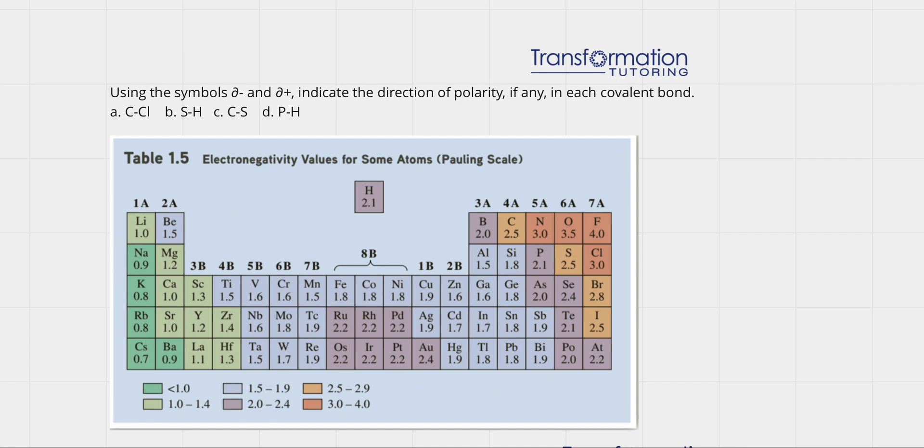Using the symbols delta minus and delta plus, indicate the direction of polarity, if any, in each covalent bond. In order for us to do that, we have to have electronegativity values, which I have put down here so we can use them.